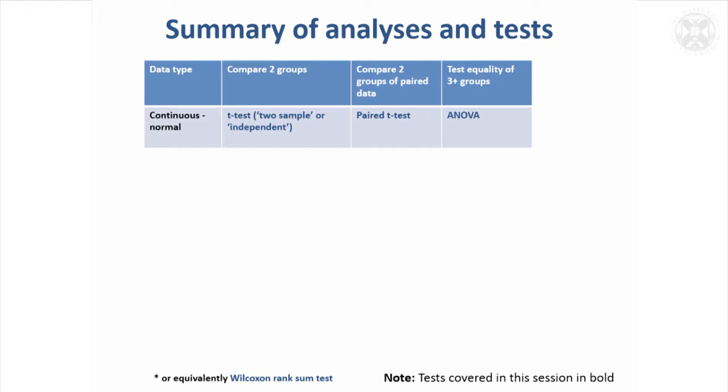I'll just summarize the different analyses and tests that we've covered in the whole of the afternoon. So for continuous data, if we can assume that it's normally distributed, to compare two groups we would do a t-test, either a two-sample or independent or unpaired t-test.